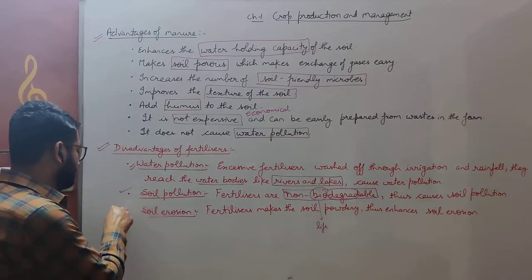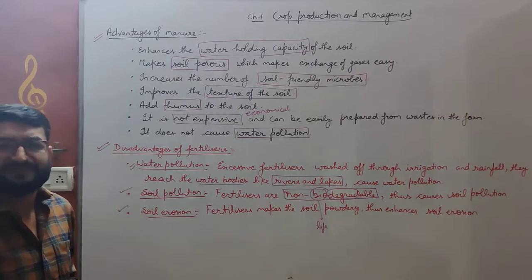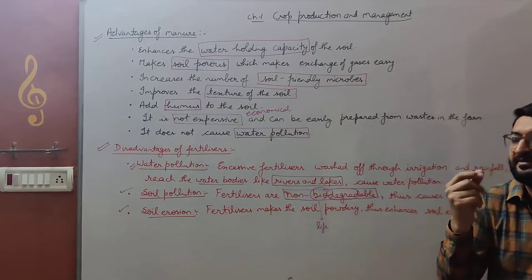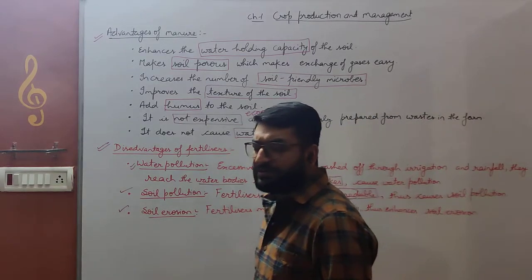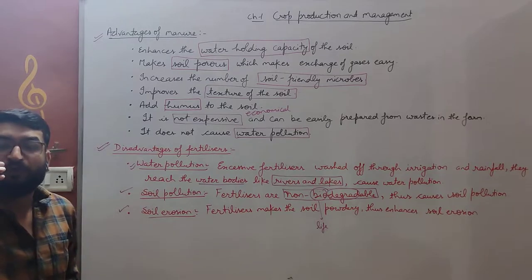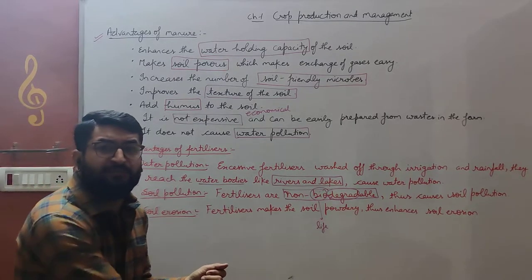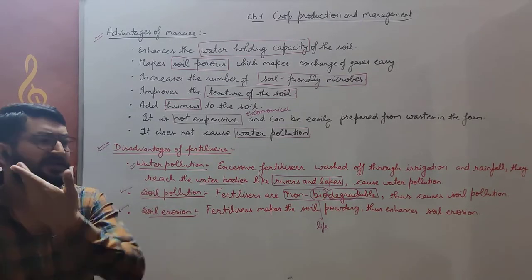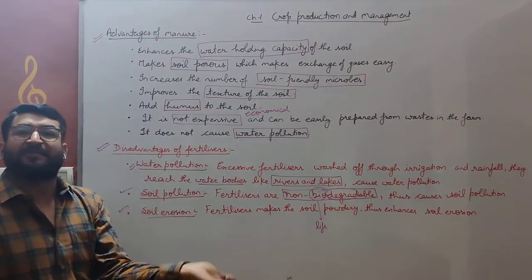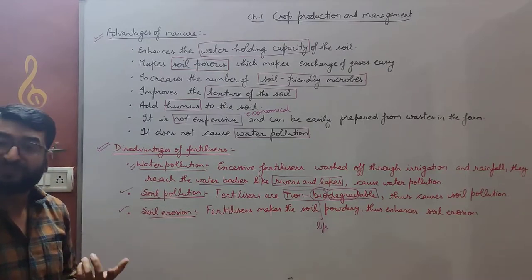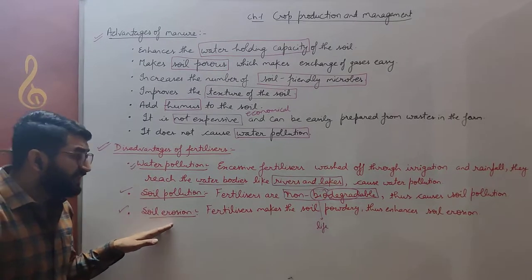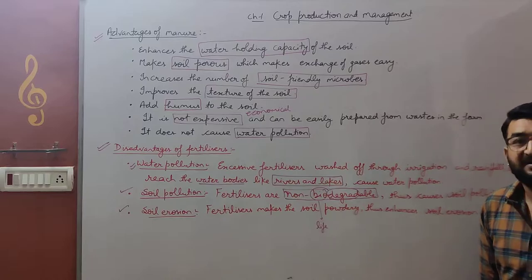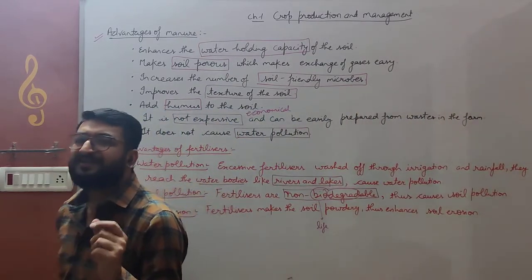Next, soil erosion. Fertilizers make the soil powdery — they convert the soil into powder form. If the soil is in powdery form, it will flow away with even a little wind, and barren land appears. This is known as soil erosion. Fertilizers convert the soil into powdered form and thus cause and increase soil erosion. These are the harmful effects of the use of fertilizers.